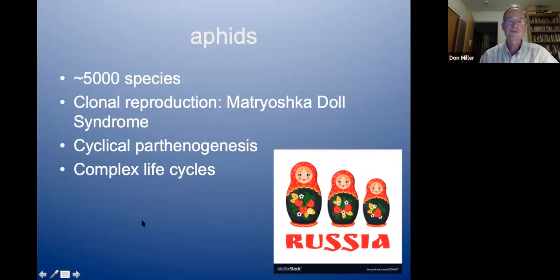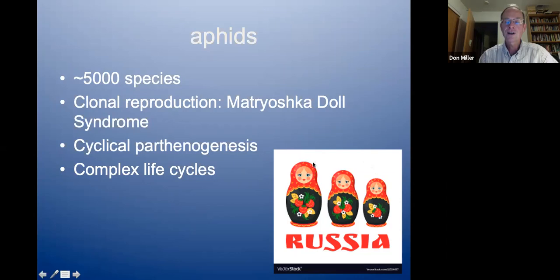Another theme and study subject is aphids — small, soft-bodied insects that annoy many people. They're famous for undergoing clonal reproduction. I liken this to what I call a Matryoshka doll syndrome: a larger doll contains a smaller doll within her, and so on. With aphids, because they undergo parthenogenesis or asexual reproduction, a female may have her daughters within her, and those daughters have granddaughters nested within — which explains how their numbers can explode so quickly.